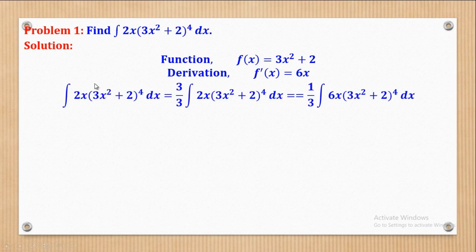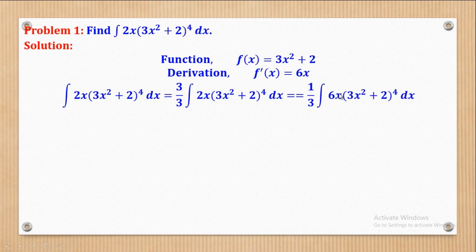The next step is to make what is inside match the derivative we obtained. Since the integral has 2x and we need to multiply by 3 to get 6x, we multiply up and down — introducing an innocent expression of 3 over 3. The 3 comes inside the integral and the denominator remains outside, giving us 1 over 3 times the integral of 6x times (3x² + 2) raised to the power 4. We have now obtained an integral with a function and its derivative.